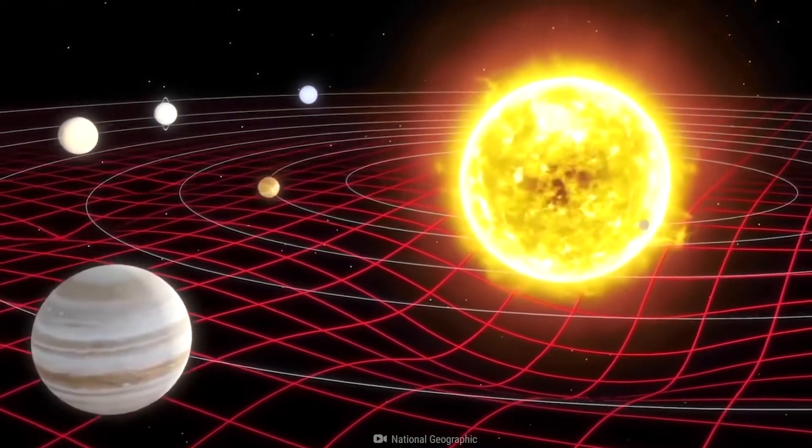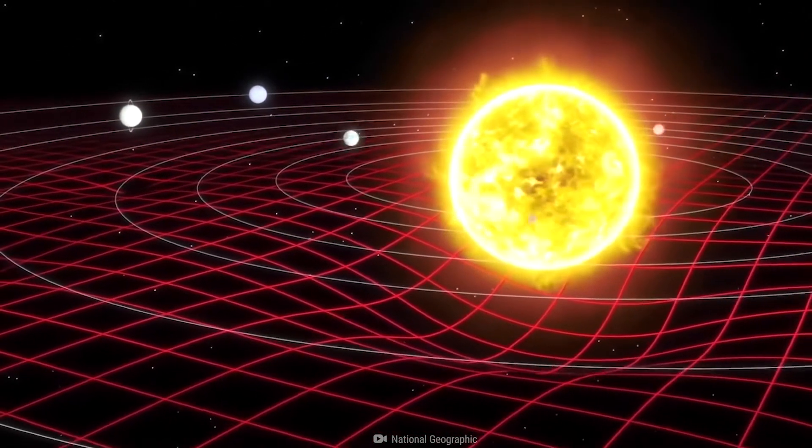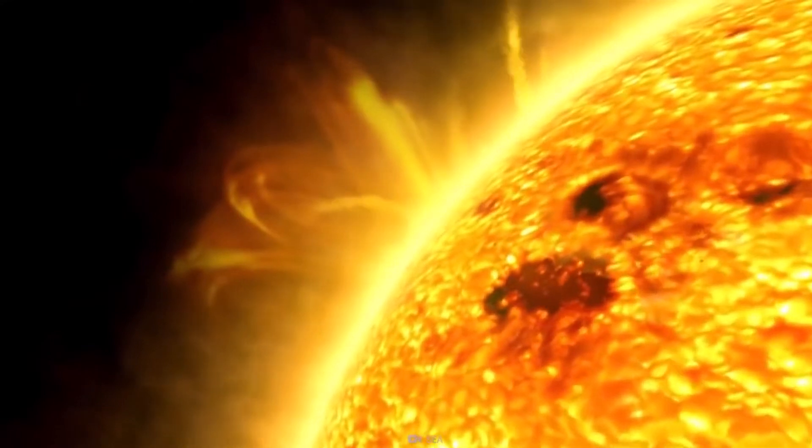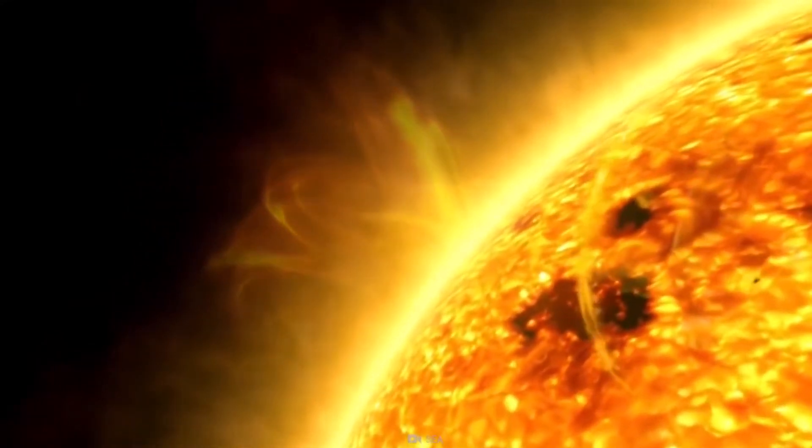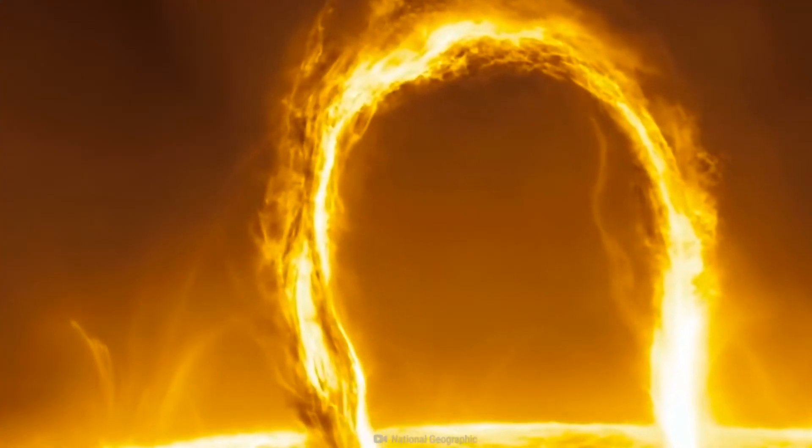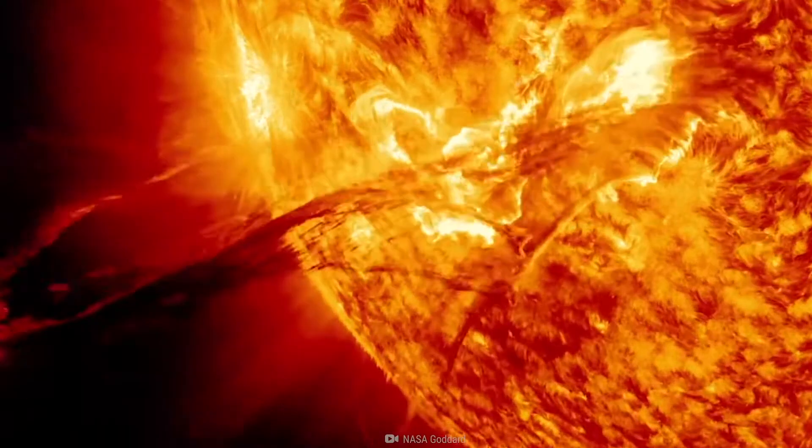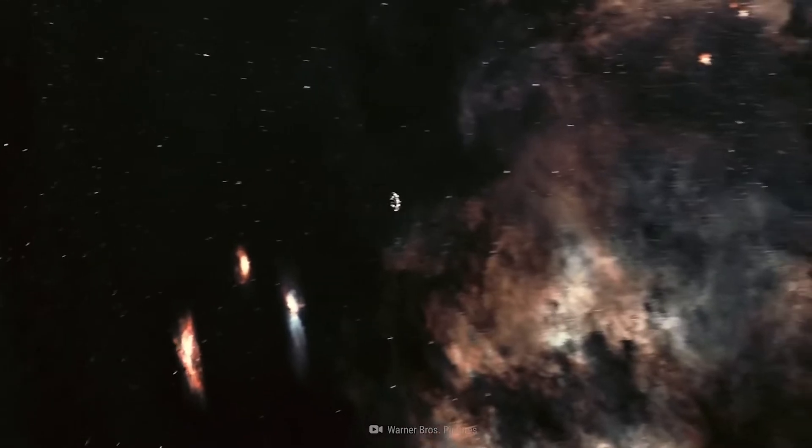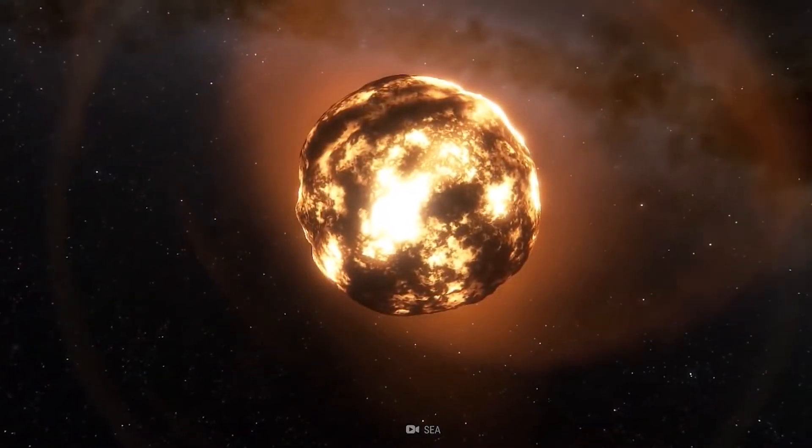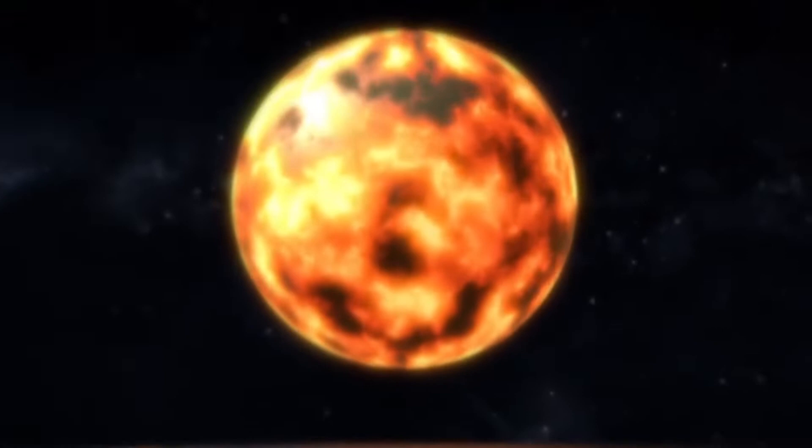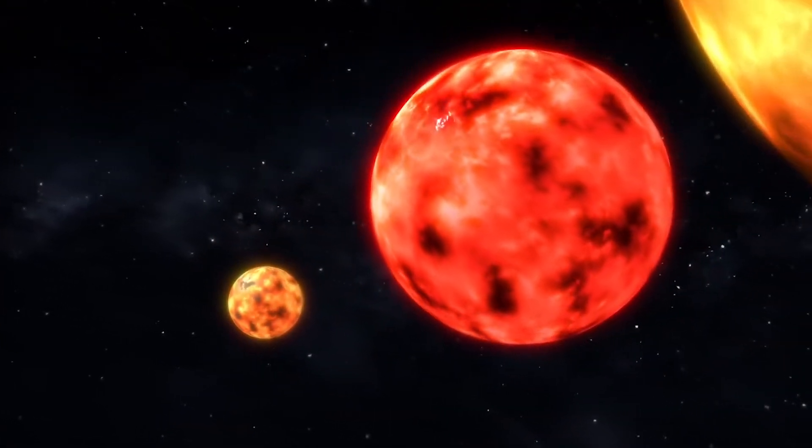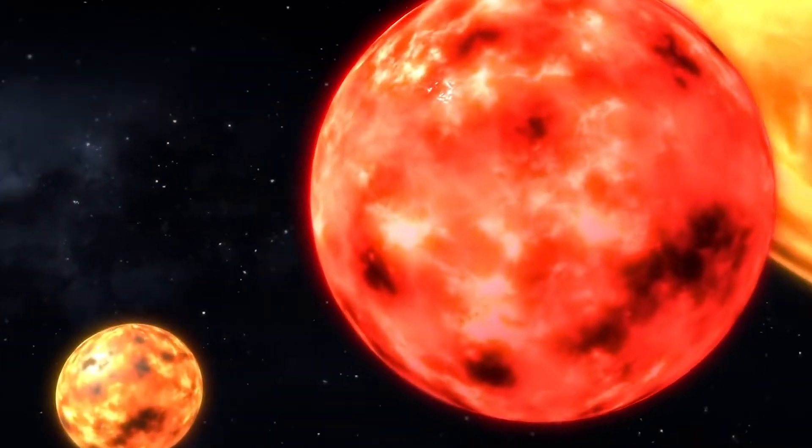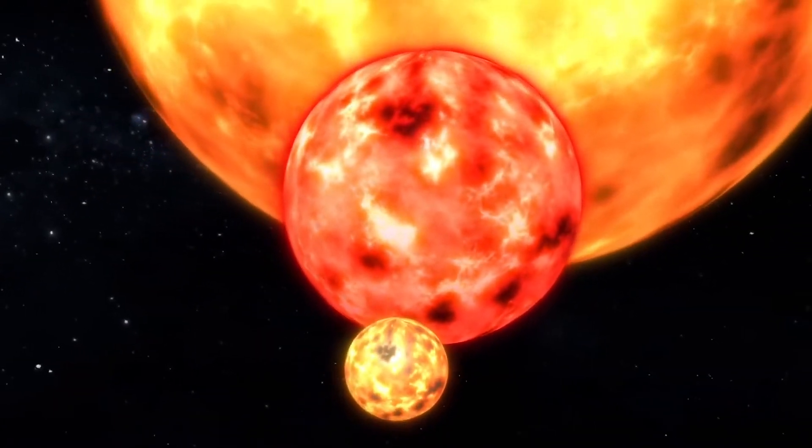The sheer magnitude of UY Scuti is difficult to comprehend. To put its colossal size into perspective, consider that if UY Scuti replaced our Sun, its outer surface would extend beyond the orbits of Jupiter and Saturn, reaching an astonishing distance of approximately 1.2 billion kilometers. Its radius is estimated to be around 1,700 times that of our Sun, making it one of the largest known stars in the universe.